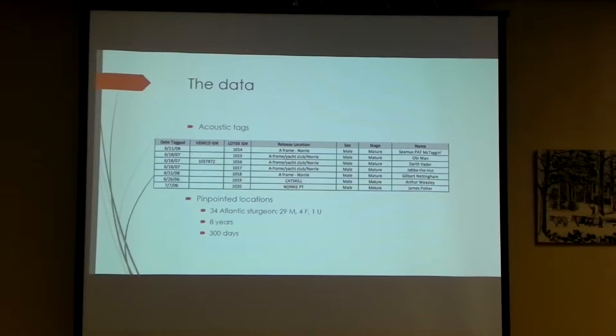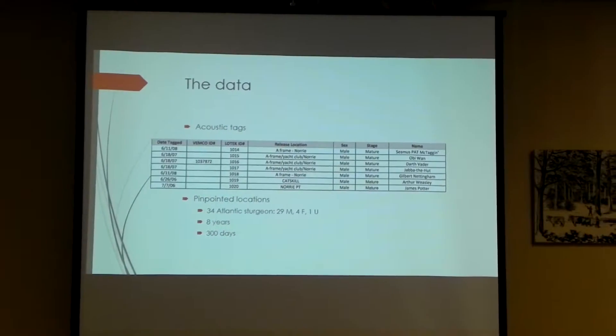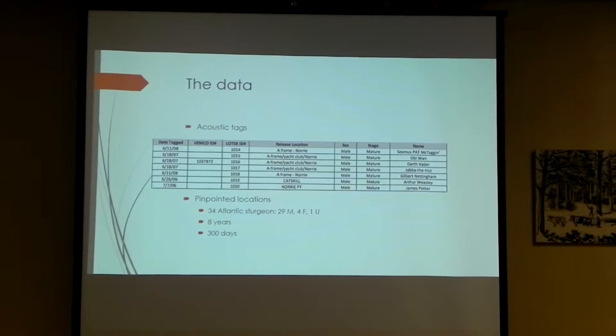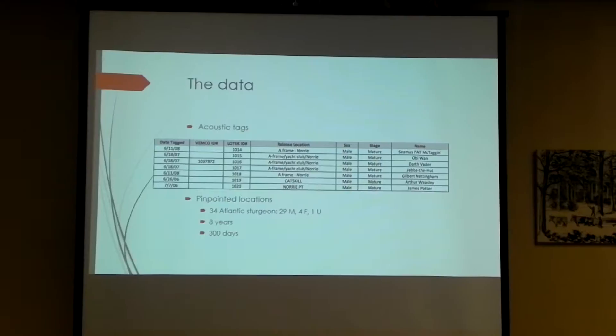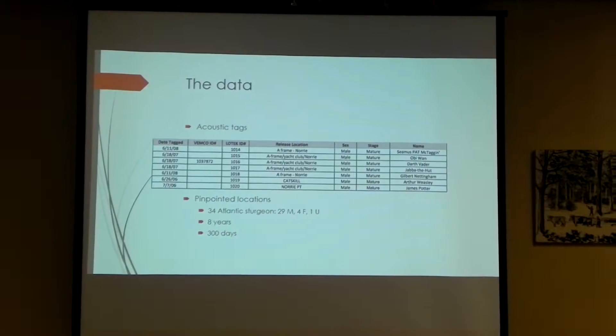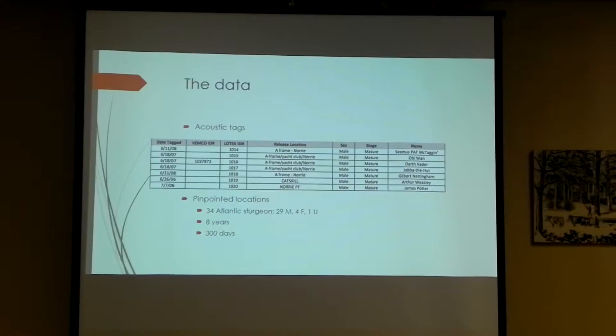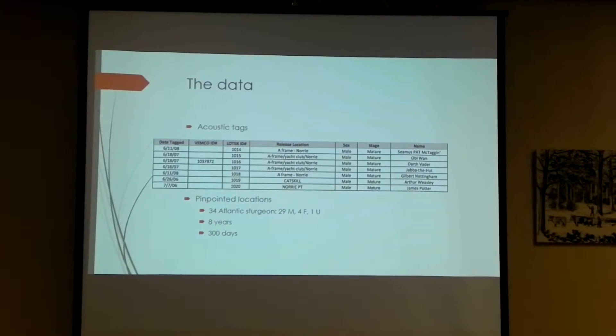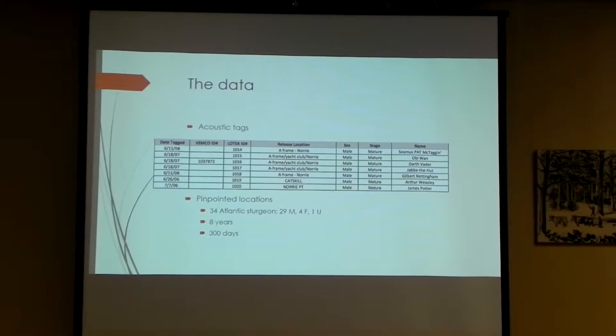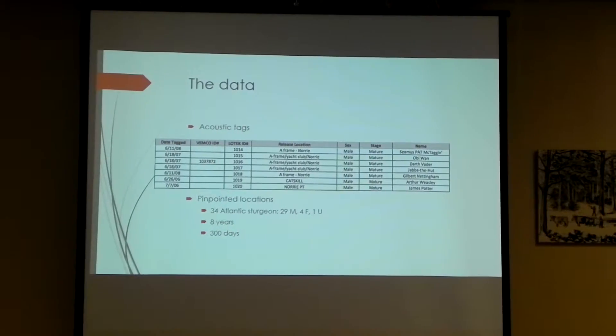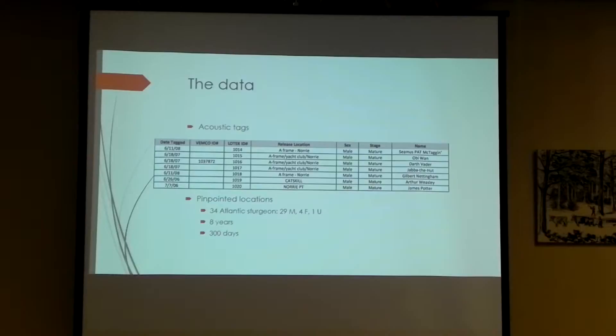The data that I'm working with is acoustic tags. This is just an example of dates tag, release locations, IDs, just what it looks like here. Sex and stage. I think the big purpose of showing this here is the delightful names that I had to work with. My personal favorite of this list being Gilbert Medingham, or the Sheriff of Medingham, I suppose. So we have the pinpointed locations of these tagged sturgeons. There are 34 sturgeons, 29 males, 4 females, 1 unknown. And we have these data over 8 years and 300 separate days over these 8 years. And if I'm remembering the dimensions of my data frame correctly, it's about 12,000 locations over these various times. So we have a lot of data to work with.